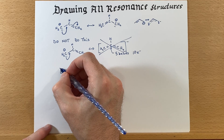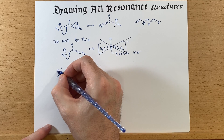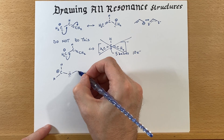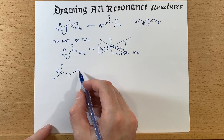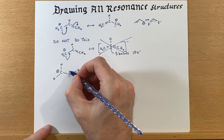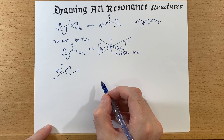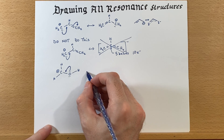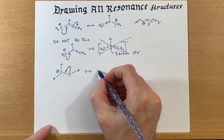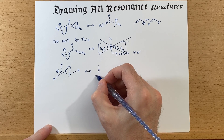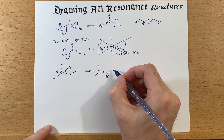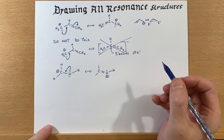Let's look at another example — this time with a positive charge. Here we have an ion with a positive charge on a carbon. We take the lone pair electrons and scoop them in between the carbon and the oxygen. When we do that, we move the positive charge over onto the oxygen. And those are the resonance structures for that ion.